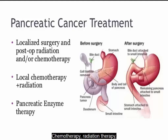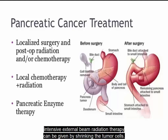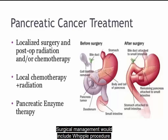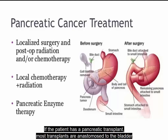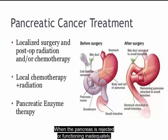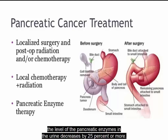Chemotherapy and radiation therapy — intensive external beam radiation therapy can be given to shrink the tumor cells. Surgical management would include a Whipple procedure. If the patient has a pancreatic transplant, most transplants are anastomosed to the bladder and drain pancreatic enzymes into the urine. When the pancreas is rejected or functioning inadequately, the level of pancreatic enzymes in the urine decreases by 25% or more.